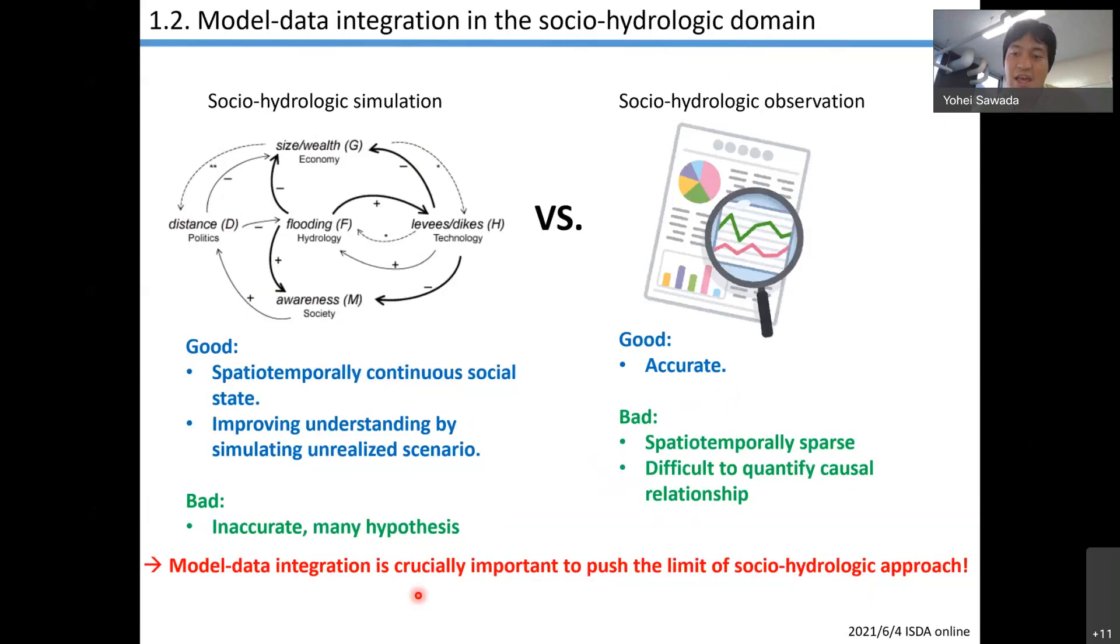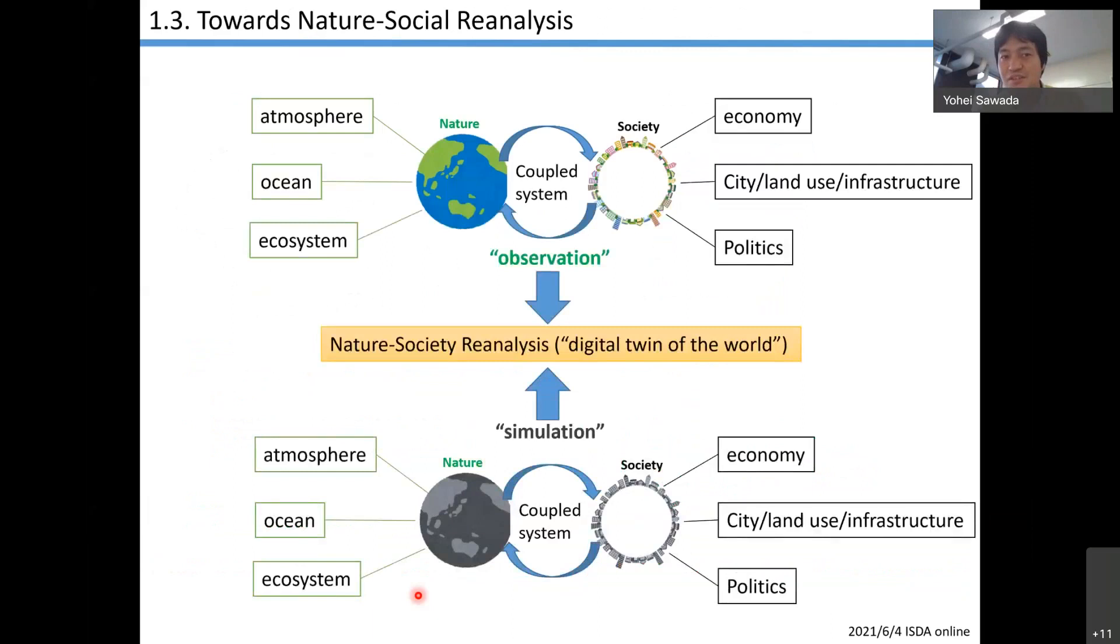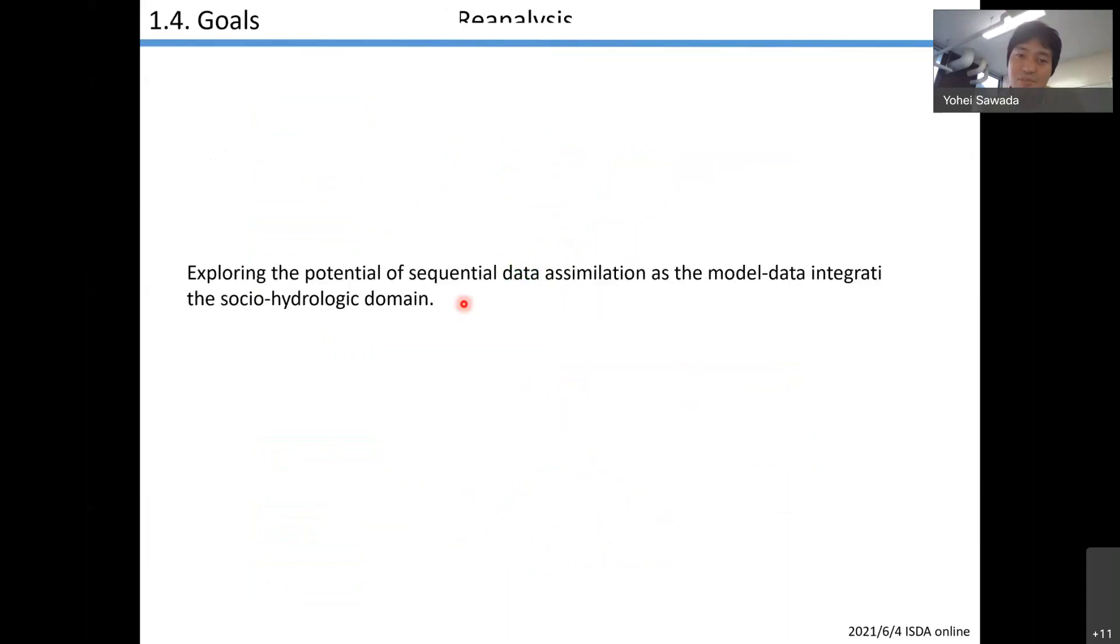The situation is very similar in geoscience. Model-data integration is crucially important to push the limit of the socio-hydrological approach. And also, this is kind of a dreamy goal, but my dreamy goal is to construct nature-social reanalysis. We should recognize our Earth as a coupled system between nature and society. We would like to develop the digital twin of the world by integrating observation and simulation in the whole system. Towards these kinds of dreamy goals, my first step is to explore the potential of sequential data assimilation as model-data integration in the socio-hydrological domain.